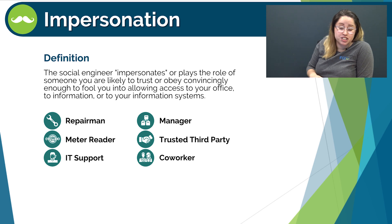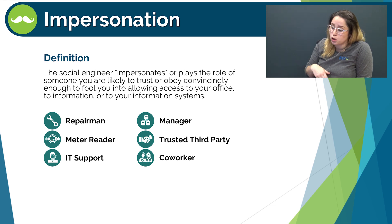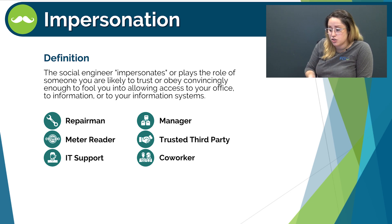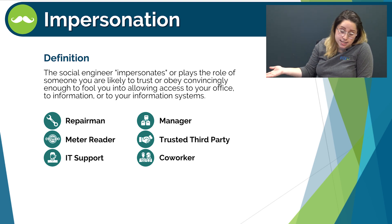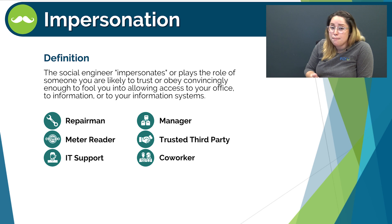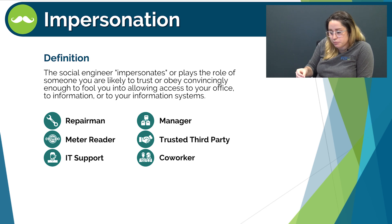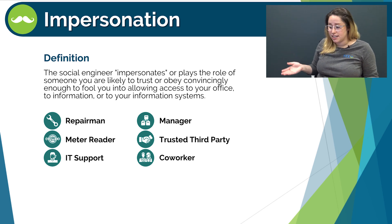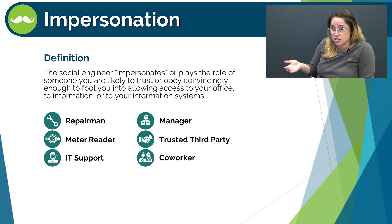Lastly, let's take a look at impersonation, which is our in-person social engineering example. Impersonation is where the social engineer impersonates or plays the role of someone you are likely to trust or obey, convincingly enough to fool you into allowing access to your office, information, or information systems. Impersonators can come in a variety of flavors and skill levels. Common examples include: repairman, meter reader, IT support, trusted third party, manager, and coworker. Both manager and coworker impersonations are most successful in larger businesses, but with the right acting ability they could be successful anywhere. Ultimately, verify the identity of anyone who may be asking about information or access to your business.